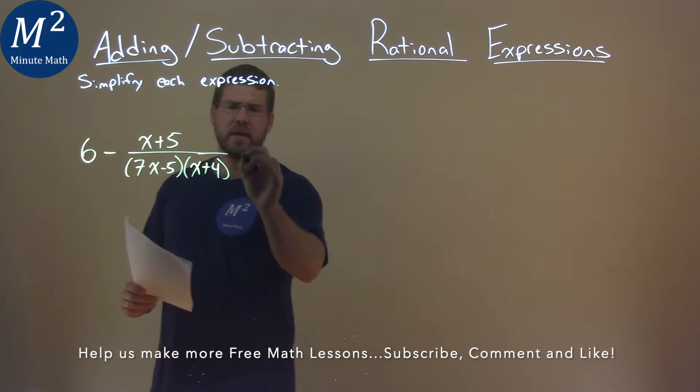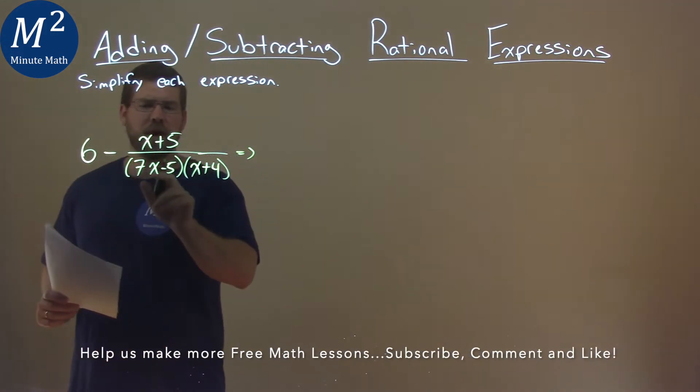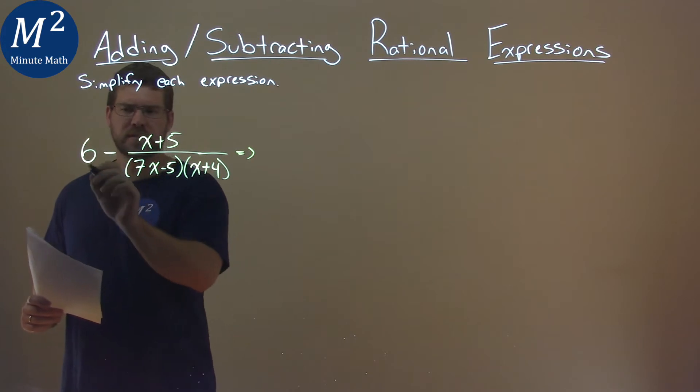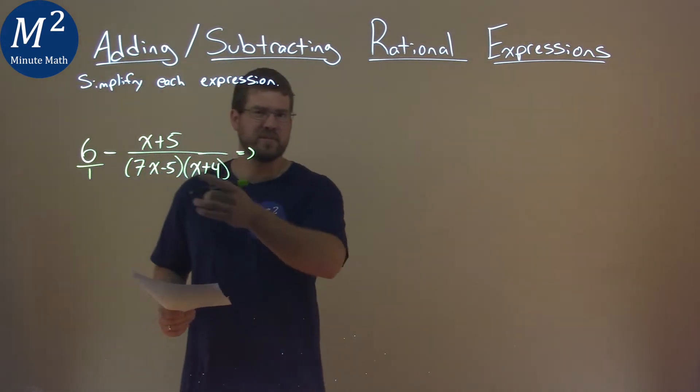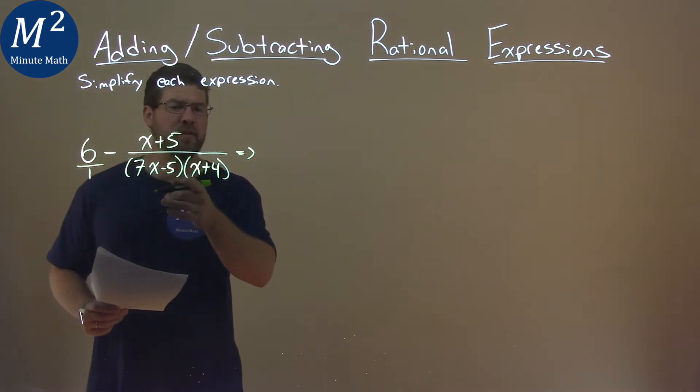The main thing here is these do not have the same denominator. 6 has a denominator really of 1, and the second part is this multiplication, 7x minus 5 and x plus 4.